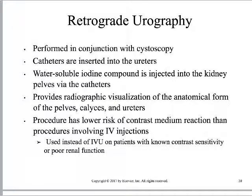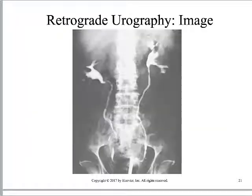Retrograde urography is about as fun as it sounds — we create enough pressure within the urinary system to backflow the ureters into the kidneys. This is most often used now in surgery during kidney procedures, to guide the surgical procedure itself. We place a catheter into the ureter by going up the urethra through the bladder, then backflow the ureter with contrast. This has a lower risk of contrast reactions than IV contrast because we've circumvented the entire circulatory system.